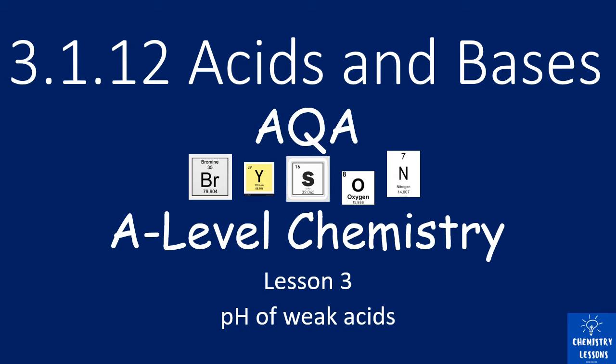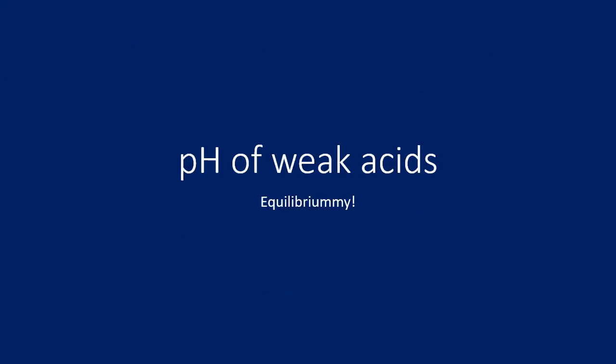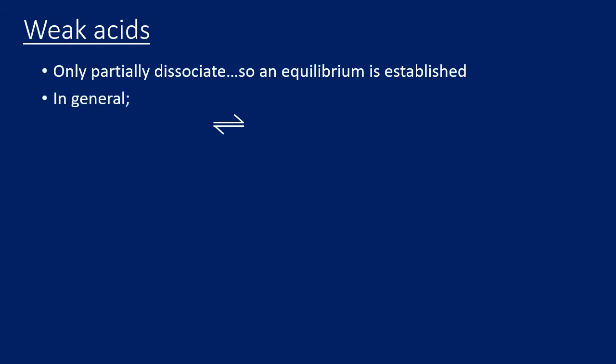This is lesson three — it looks at the pH of weak acids. Lesson one was looking at definitions and the pH of strong acids. Lesson two was looking at the pH of strong bases and using the Kw constant. This lesson is about weak acids, and it's equilibrium-heavy — there's an awful lot you need to understand about equilibrium in order to do this topic.